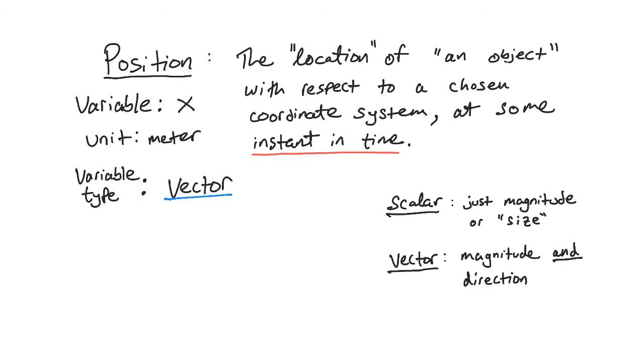Now every time we invent a new quantity in physics, we have to talk about one more idea. So here when we outlined position, we came up with the symbol x for it. And then it's of course measured in meters. But we also have to discuss what is the type of this variable? Is it a scalar or a vector?